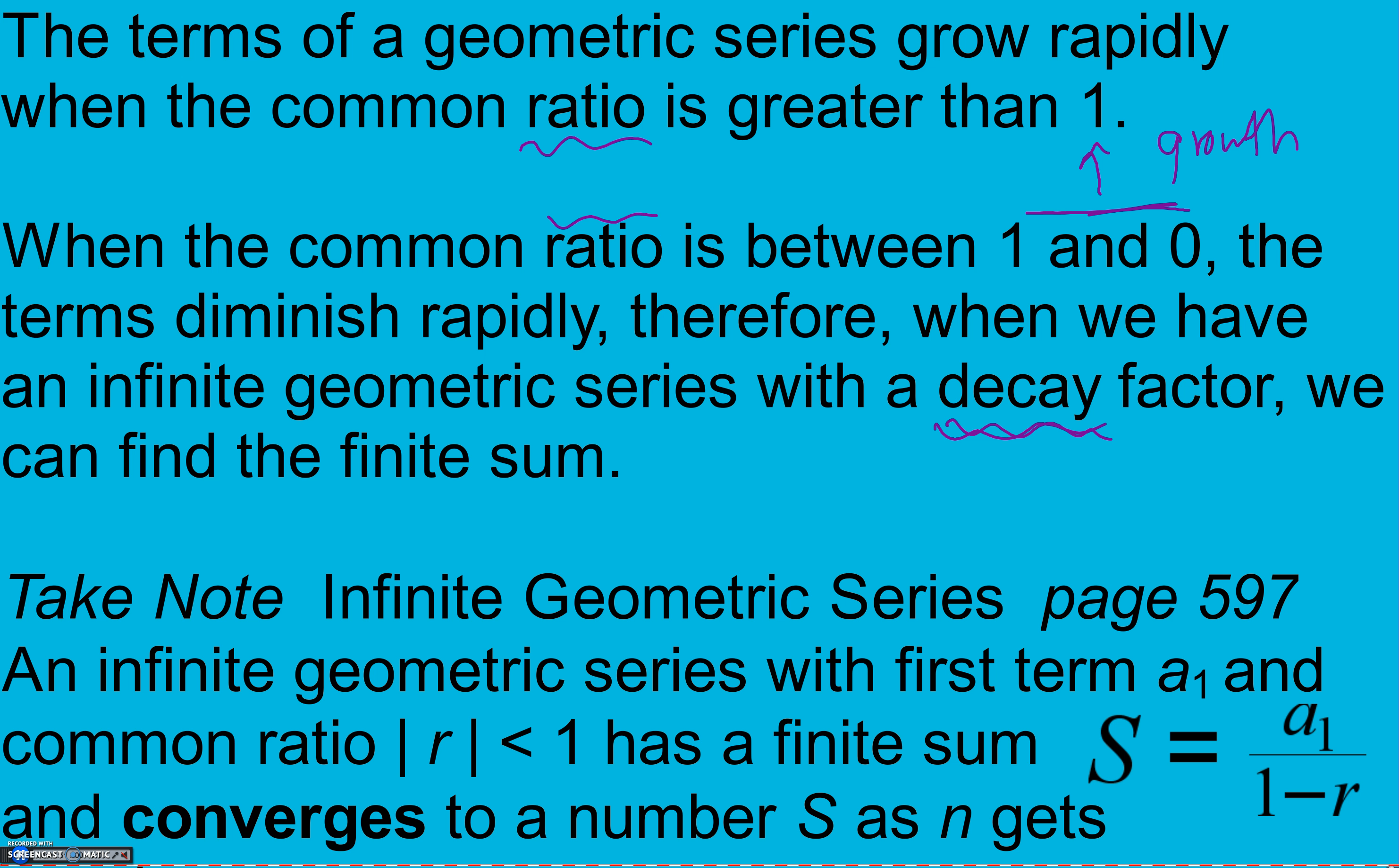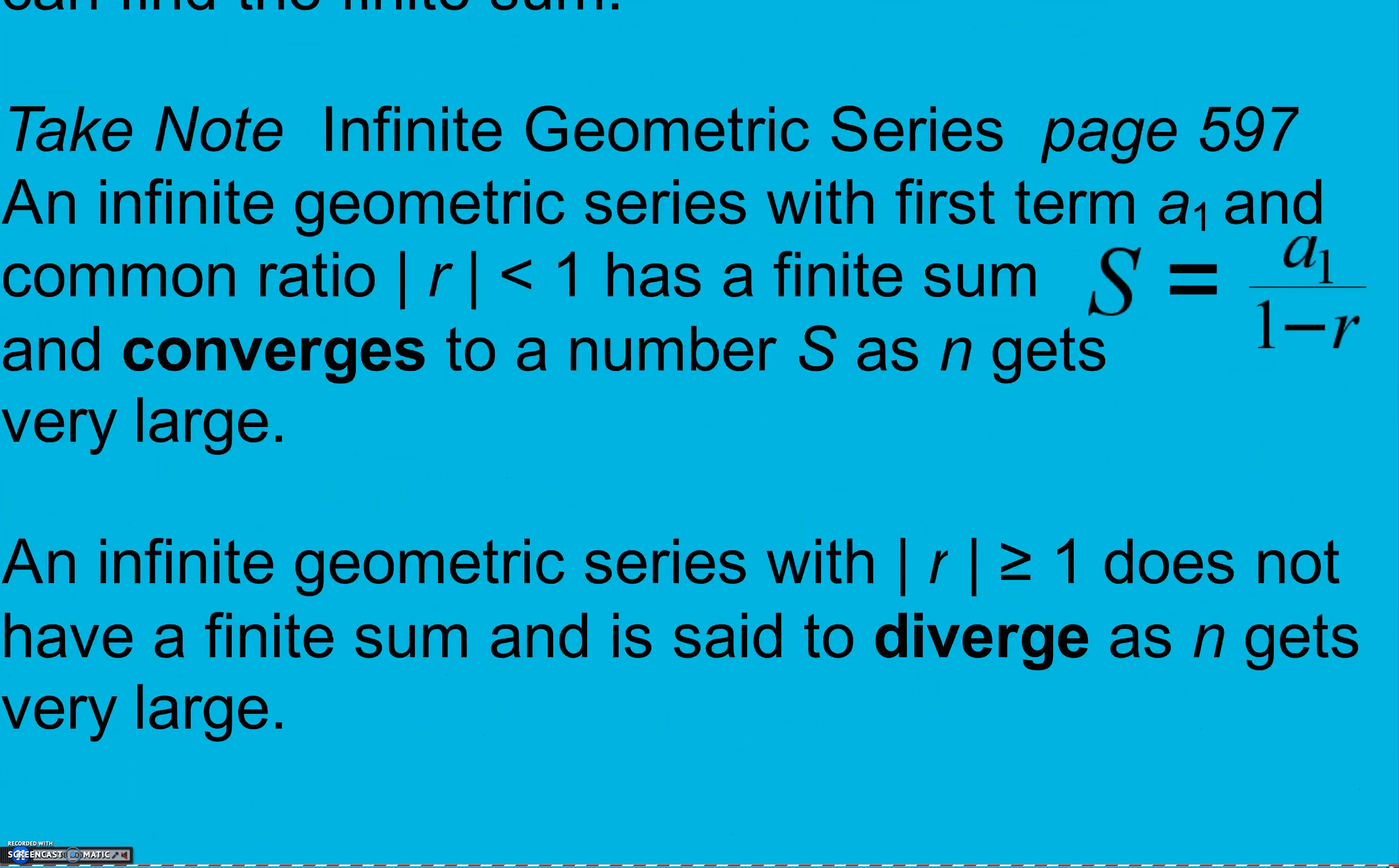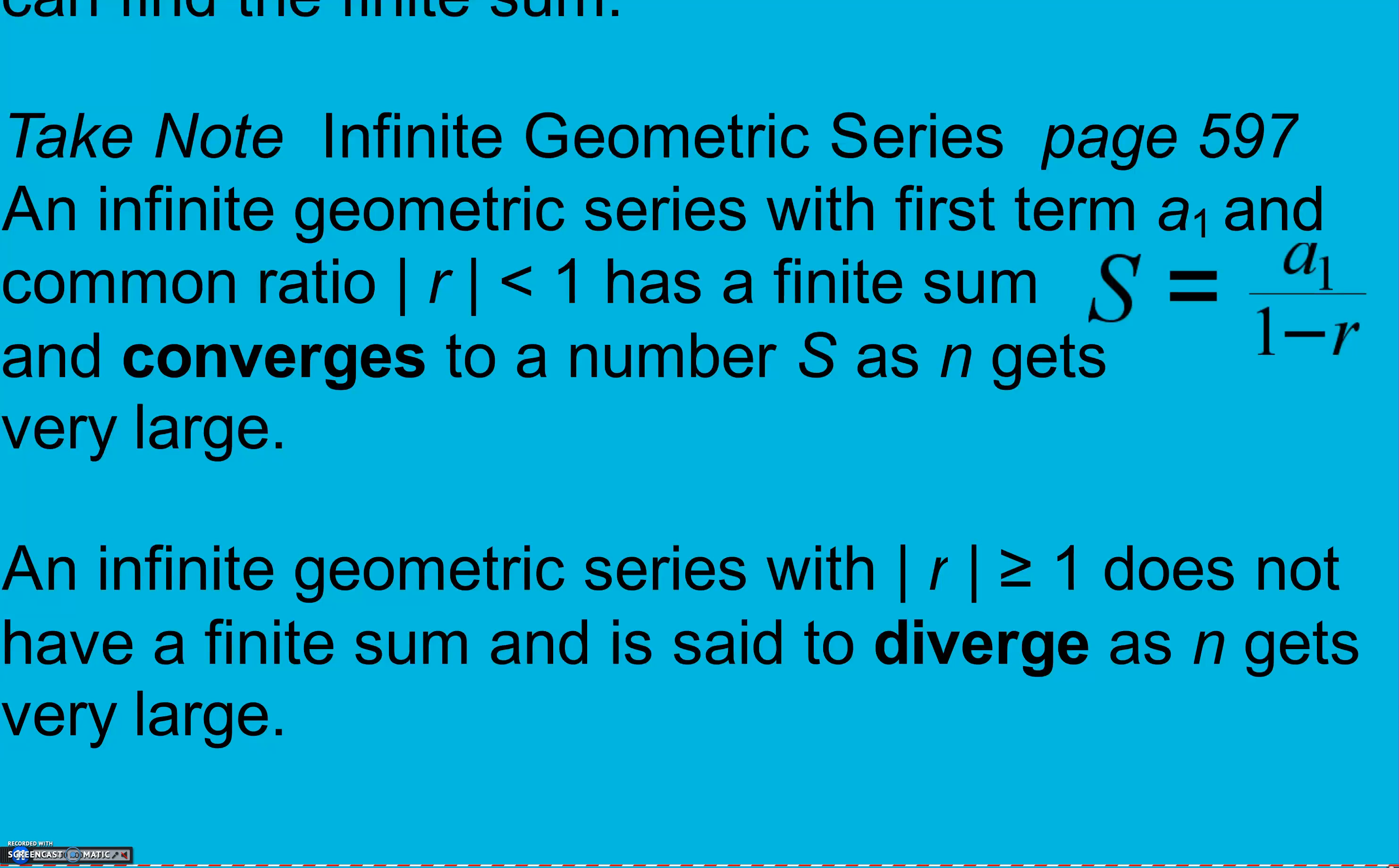Take note on page 597: infinite geometric series. An infinite geometric series with a first term a sub 1 and common ratio with the absolute value less than 1 has a finite sum. Our sum is going to be our first value divided by 1 minus r. And that's because the r to the nth power is going to get close enough to 0 to not really matter.